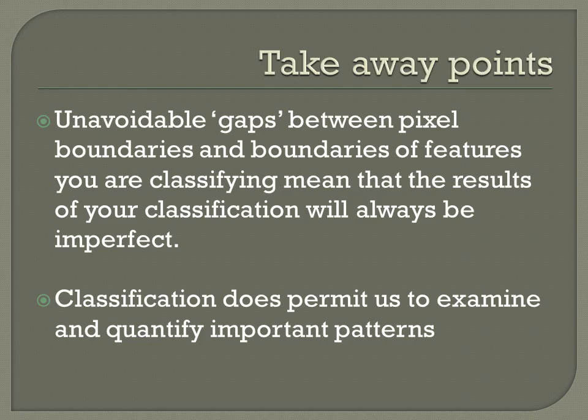Here are the takeaway points for supervised classification. The classification criteria are the spectral signatures of the pixels contained in user-created training samples, and meaning is assigned to classes prior to classification of the Landsat scene. The same problem occurs in supervised as in unsupervised classification: new or unwanted classes may be created, or some pixels simply won't have a spectral signature that permits classification with those in the training sample. There are also unavoidable gaps between pixel boundaries and feature boundaries, meaning classification results will always be imperfect. That said, classification does permit us to examine and quantify important patterns in the landscape.